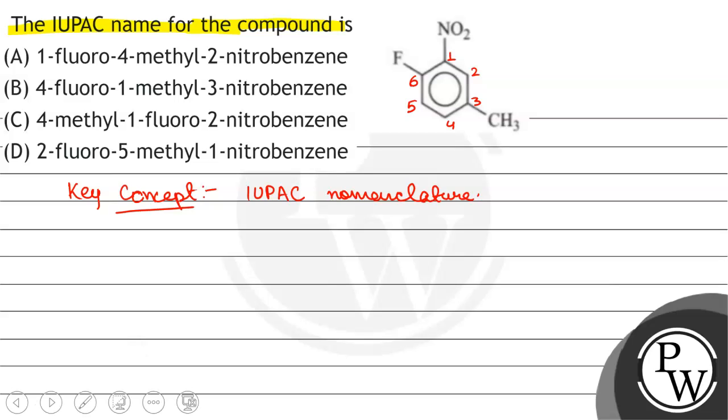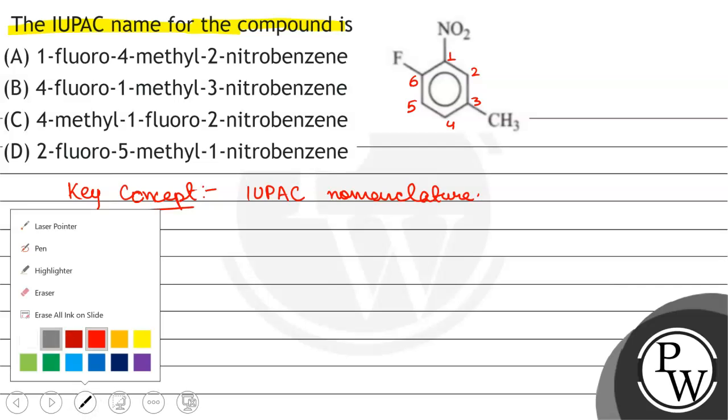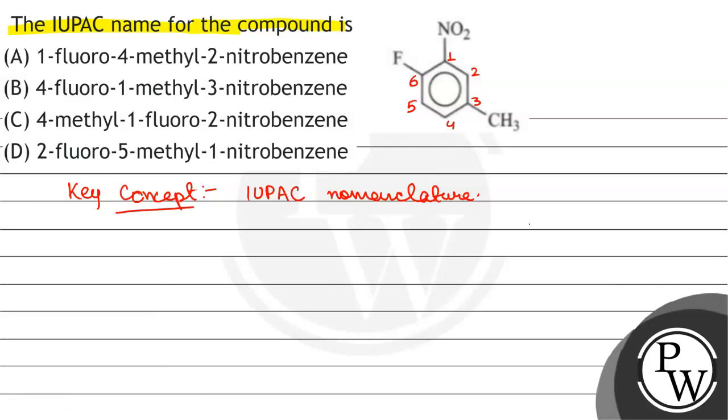Now we will see that NO2 is a functional group, so we will start the numbering. NO2 is a functional group and these two F and CH3 are the substituents. So we will start the numbering from functional group.